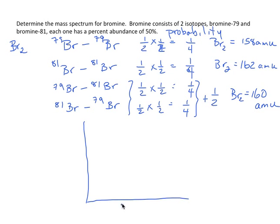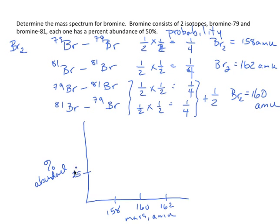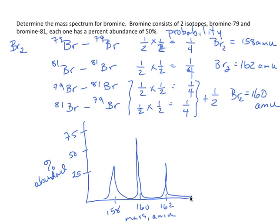So when we draw what we expect the mass spec to look like, we are going to have peaks at 158, 160, and 162 on the mass-in-atomic-mass-units axis, with percent abundance on the vertical axis going up to 25, 50, 75. The 158 peak is at 25%, the 160 peak should go up to 50%, and the 162 peak is also at 25%. So we would expect the mass spectrum of bromine with its two isotopes to look like that.